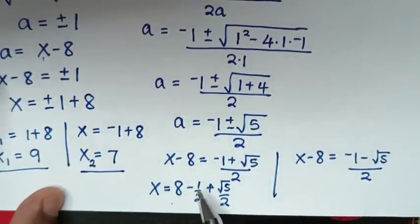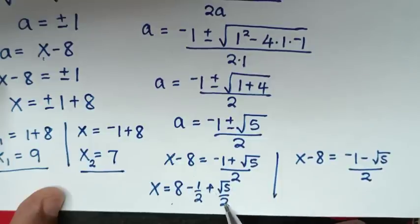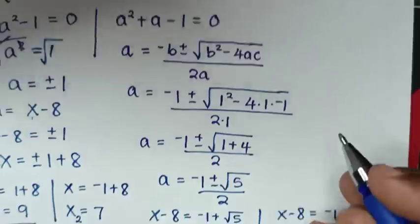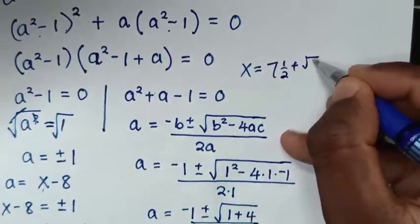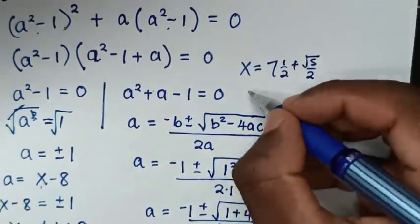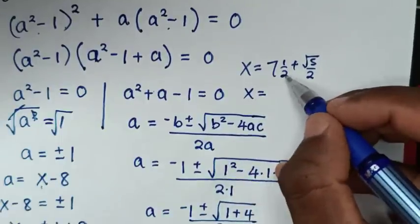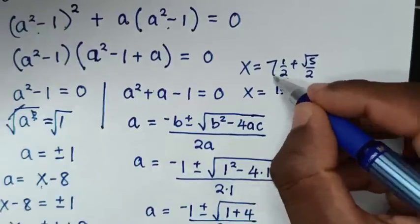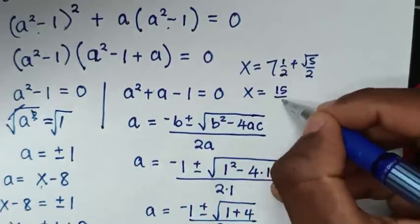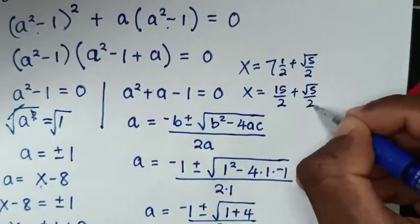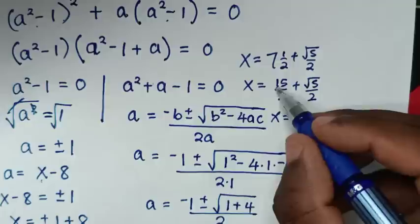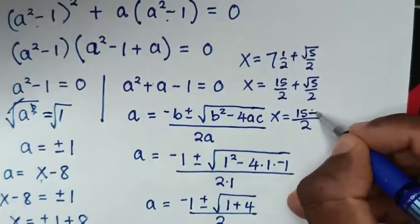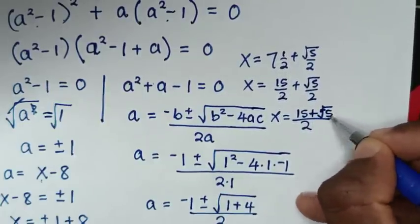To solve for x from the positive case, we take negative 8 to this side. So x equals 8 plus (negative 1 plus square root of 5) over 2. Then 8 minus one half is 7 and one half, plus square root of 5 over 2. Converting: 14 over 2 plus 1 over 2 is 15 over 2. So x equals (15 plus square root of 5) over 2.